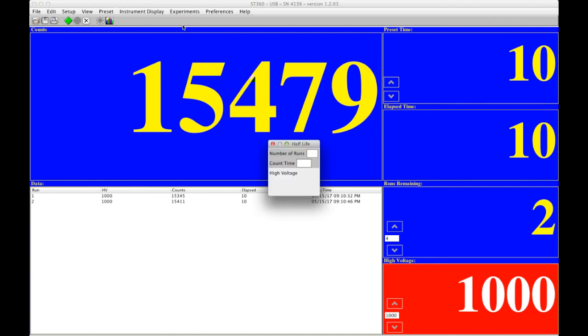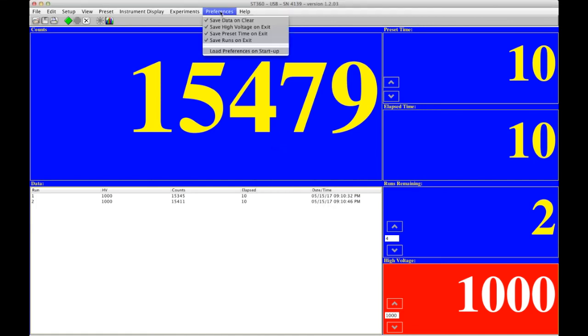On the half-life, I have number of runs, count time, high voltage, graph results. This is used for isotopes with a short half-life, and it documents and studies the decay and graphs it. And that's about it for the software.